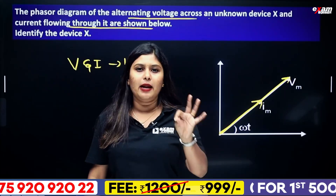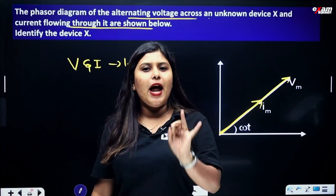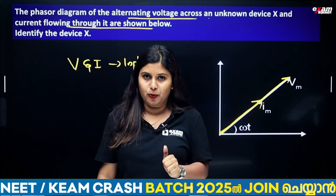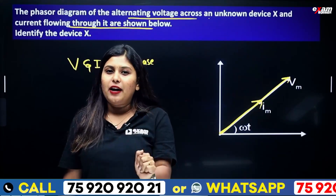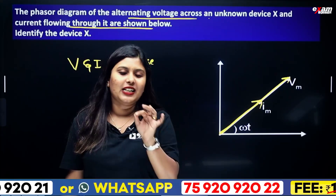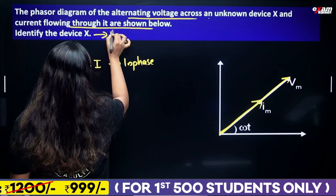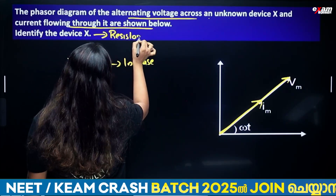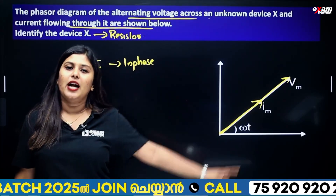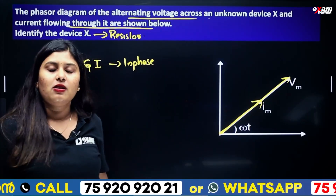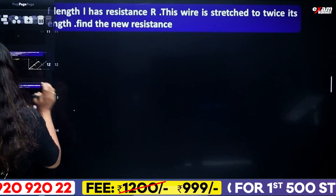In this chapter, we will learn 3 elements: pure resistive, pure capacitive, and pure LCR circuit. When voltage and current are in phase, it is a pure resistive circuit. So the unknown element X is a resistor.